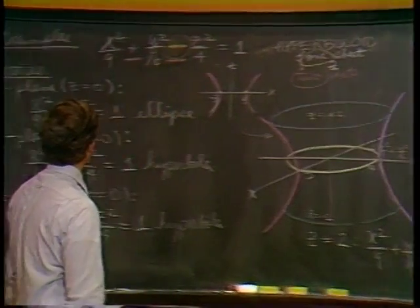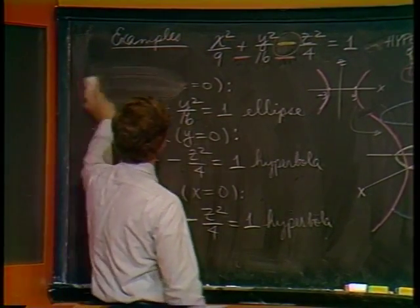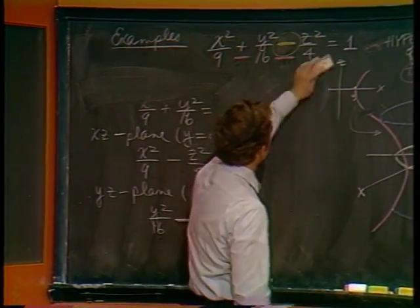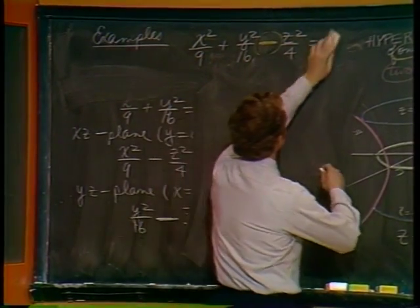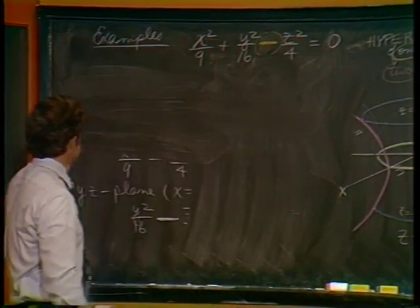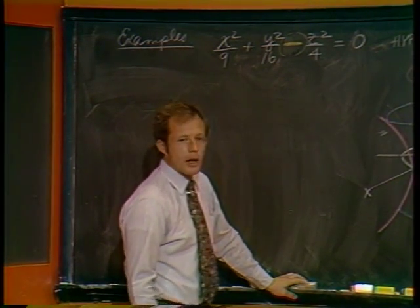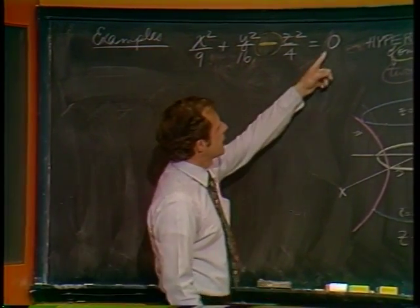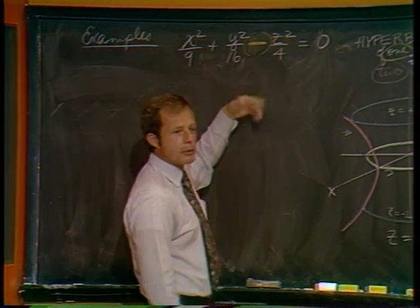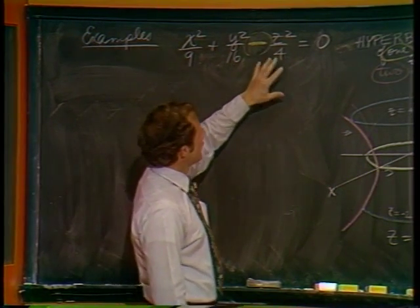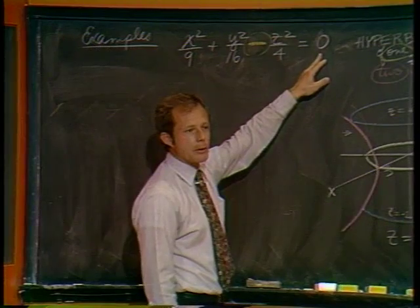Okay, let's take off and look at yet another surface. Let's get rid of the double negatives and put a zero on that side. Actually, you might say, why zero? Why don't you put a 2 or something? Notice if there's any non-zero value here, you can divide through by that number and absorb it into these denominators.